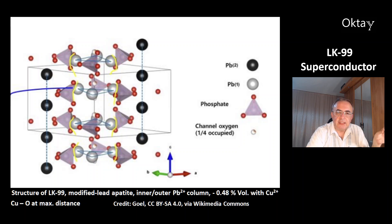The replacement of lead ions with copper ions causes a volume reduction by 0.48%, according to these scientists. Theoretical calculations show that the oxygen ions in the middle prefer a maximum distance from the copper ions that cause the stress.